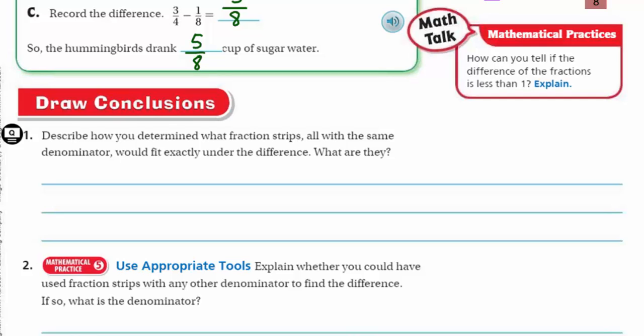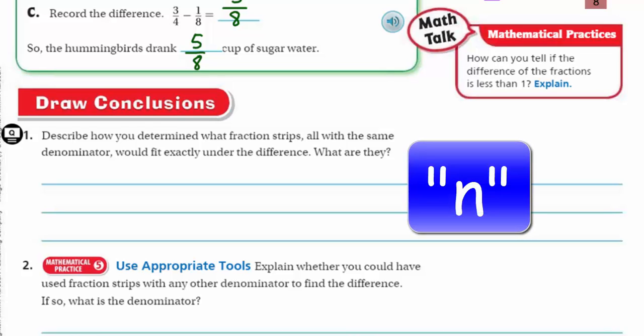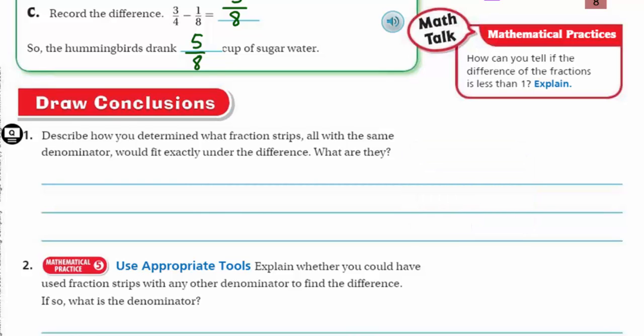So now we have draw conclusions. Describe how you determined what fraction strips all with the same denominator would fit exactly under the difference. We always want to try the largest ones. You saw me do that. I was trying the large fraction strips to see if it would fit exactly under the difference. A lot of larger ones did not work, one-half did not work, and then I took smaller strips with the denominators whose strips fit exactly. That was the one-eighth, and I also thought out loud about how finding the multiples of numbers can sometimes make it easier to get a denominator.